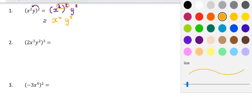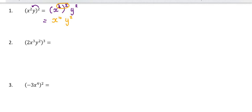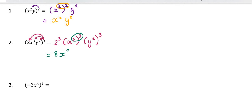Now I practise Law 3, because I'm raising a power to another power, so I multiply: x to the power of 4, y squared. In the long run we go straight to the answer, but while practising I'll write the long way. For (2x³y²)³: 2 needs to be cubed — not 2 times 3, it's 2 cubed — then x cubed needs to be cubed, and y squared needs to be cubed. 2 cubed is 8, raising a power to another power I multiply, so x to the power of 9 and y to the power of 6.